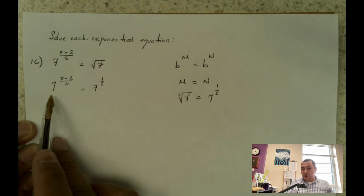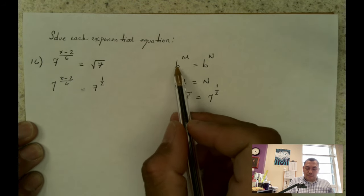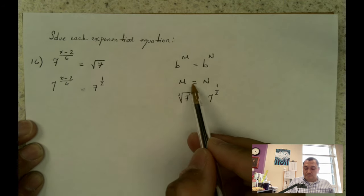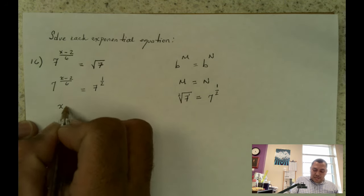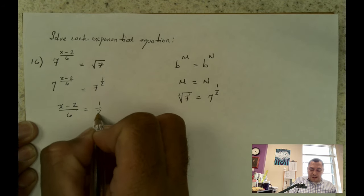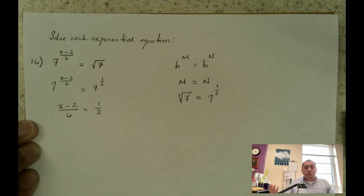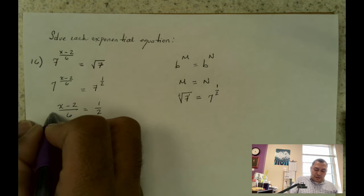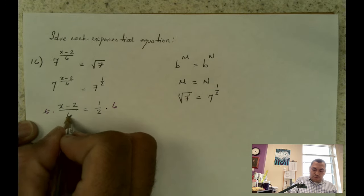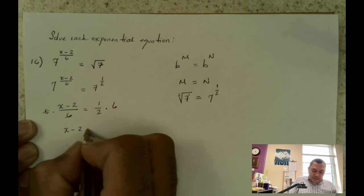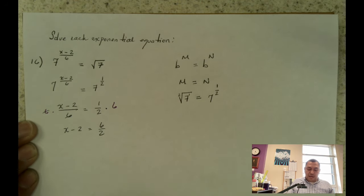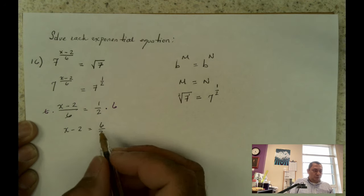Now my bases are the same so I can apply this property where the bases are the same so the exponents will equal each other. So m equals to n. So I have x minus 2 over 6 equals to 1 half. Now I'm going to solve for x. I have a denominator 6 so I can multiply both sides by 6. So these two cancel. So I have x minus 2 equals to 6 over 2. I'm doing it step by step so you can see all the steps. So 6 divided by 2 is 3.